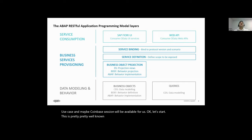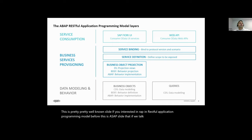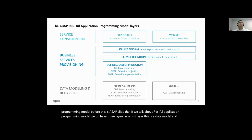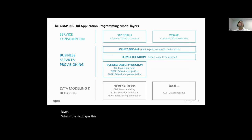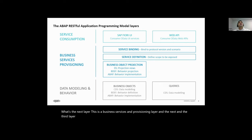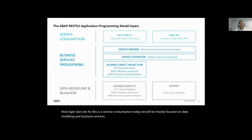This is a well-known SAP slide about the Restful Application Programming Model. If you're interested in RAP, it has three layers: the first is the data model and behavior layer, the second is business services and provisioning, and the third is service consumption. Today we'll be mostly focused on data modeling and business services provisioning layers.